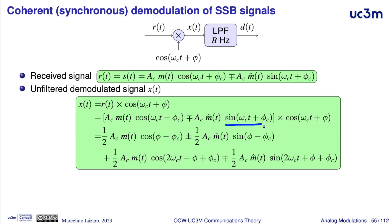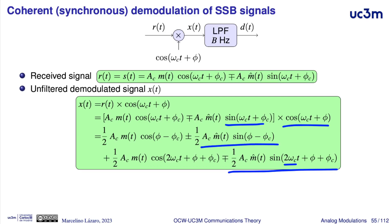Then we have the product between the sine and the cosine. Sine times cosine can be written as sine of the addition of arguments, giving a sine at two times the carrier frequency, minus sine of the difference between arguments — in this case the difference between phi and phi_c.